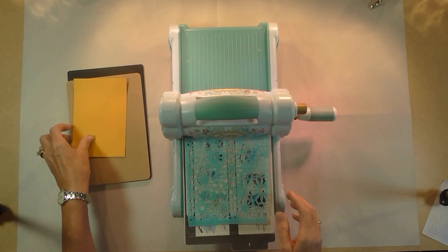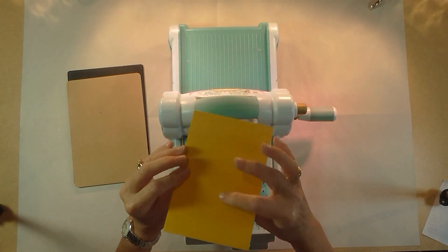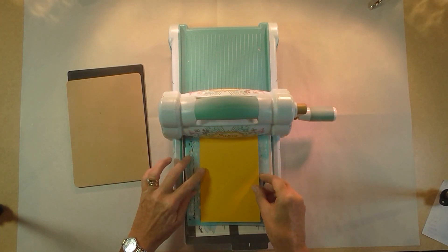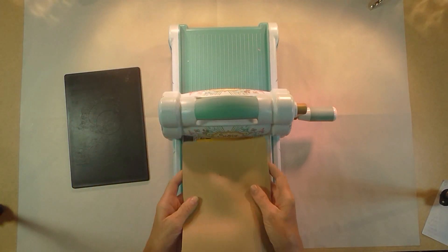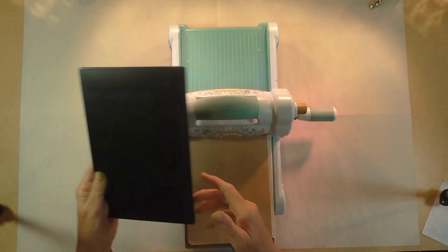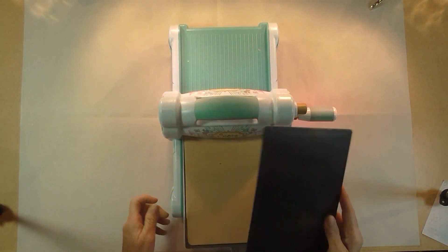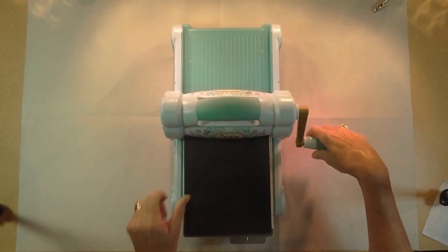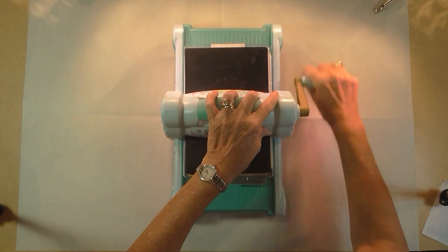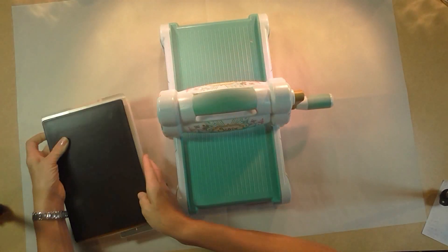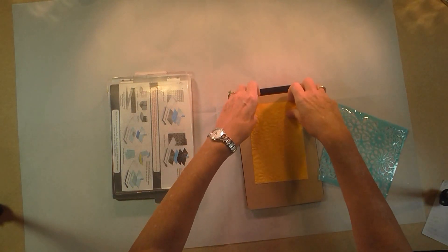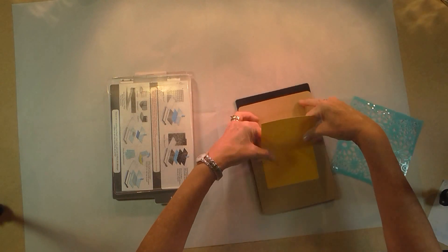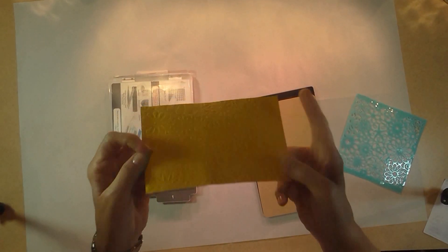Next I'm going to put down my cardstock, and you want to make sure that if you want the textured side showing, that textured side goes down on top of the actual template. Next I need to put my silicone mat, and then finally I'm going to put my Sizzix textured plate on top of that, and then I'm just going to roll that through. Just pop this away for now.